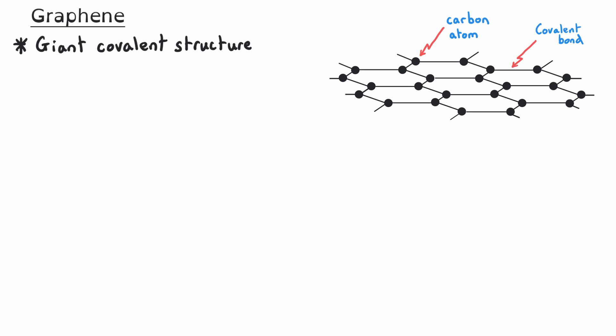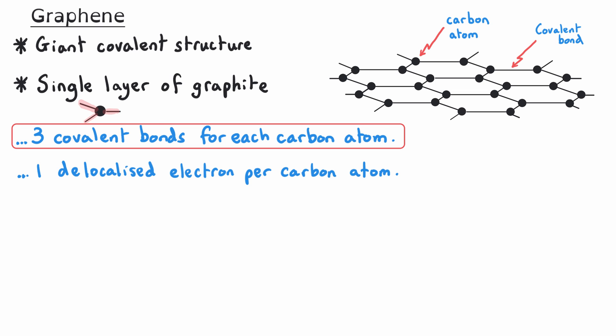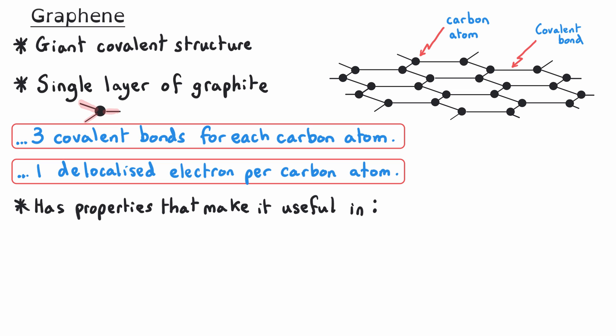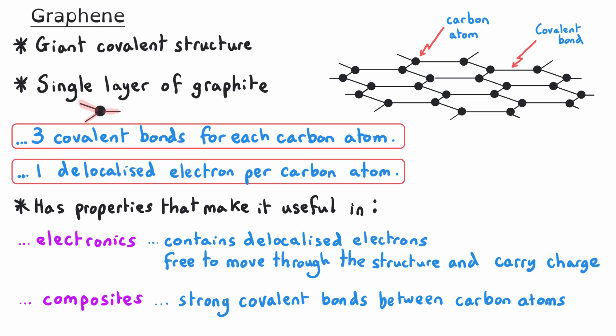Graphene is a giant covalent structure made up of a single layer of graphite. It looks similar to graphite — still one layer of hexagonal rings. Like graphite, there are three covalent bonds for each carbon atom, and therefore one delocalized electron per carbon atom. Graphene shares some properties of graphite, making it useful in electronics because it contains delocalized electrons free to move through the structure and carry charge. It is also useful in composite materials due to its enhanced mechanical strength, lightweight nature, and durability, which comes from the strong covalent bonds between carbon atoms.